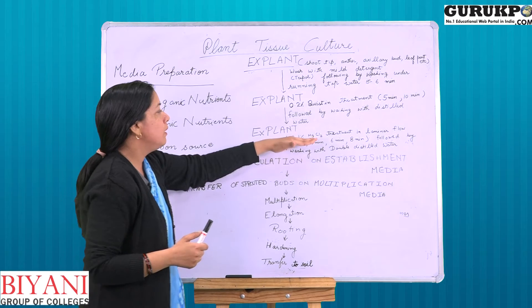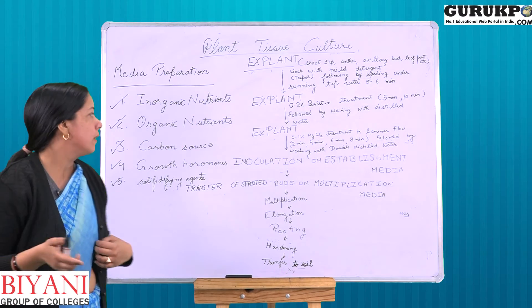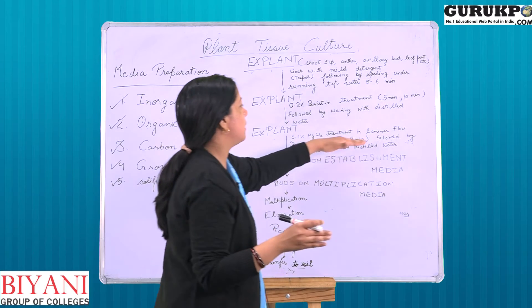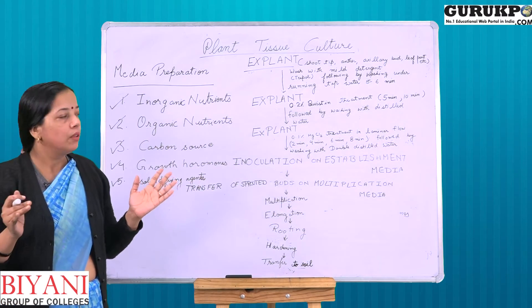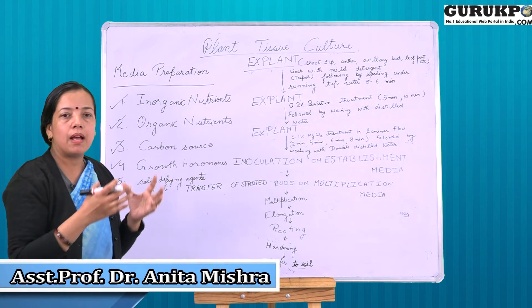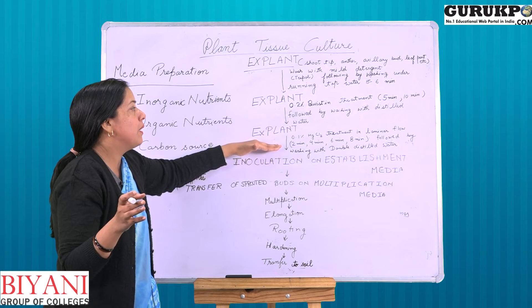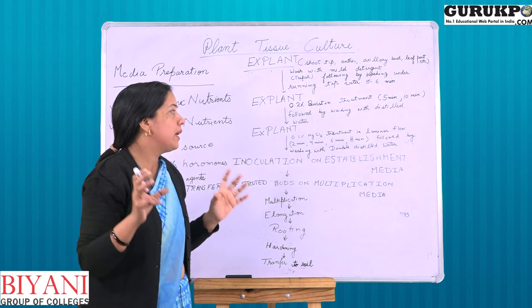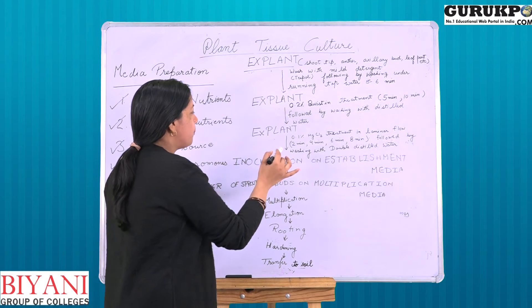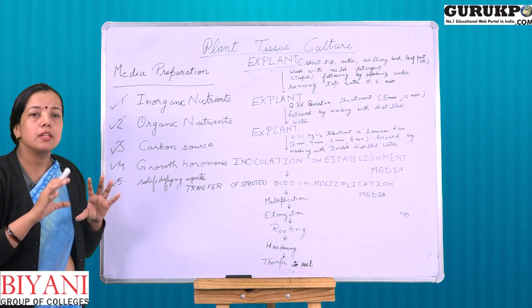The explant is again washed with 0.1% HgCl₂ treatment, and the duration depends on the condition of the plant and the explant — it may be 2, 4, 6, or 8 minutes. This is done in the laminar air flow chamber, which provides sterile conditions. We take the explant from the field, sterilize it using detergent, then Bavistin, then take it to the laminar air flow chamber where no microorganisms are present, providing very sterile conditions. Now the explant is sterilized and free of contamination.